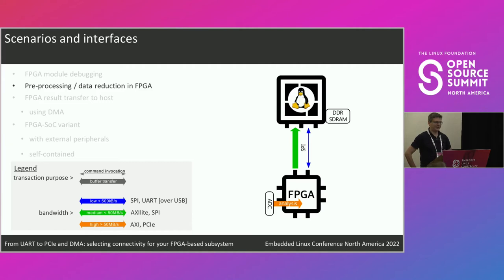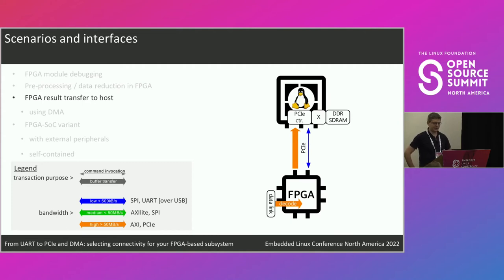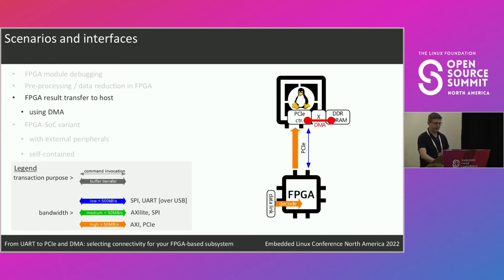FPGAs are very good at reducing data. You can have a source like an ADC that produces lots of data, and instead of bothering the Linux system with it, you put the high-performance data-crunching algorithm in the FPGA and just transport the result to the host system. There are also systems where you want a high amount of data transferred to the Linux host, and then you would need a high-bandwidth interface — PCIe — and typically you would go over memory to talk to the host system, probably using DMA.